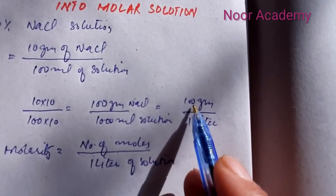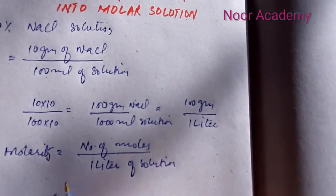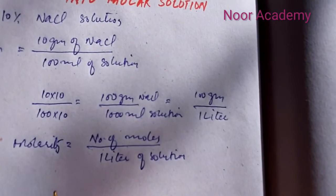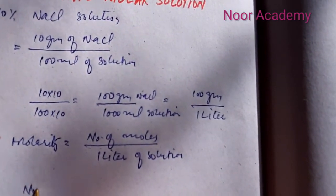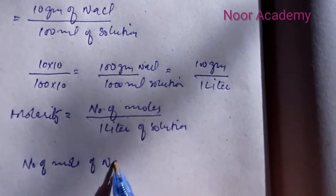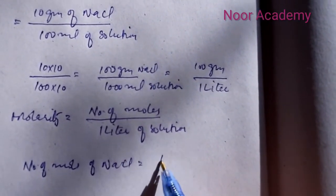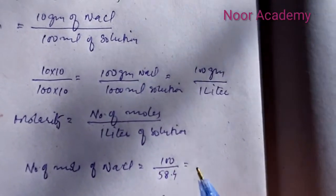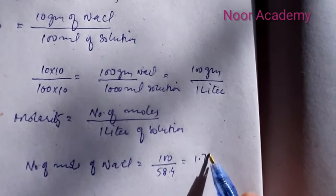We can convert this 100 grams of NaCl into its moles by dividing it by its molar mass, and the molar mass of NaCl is 58.4. So number of moles of NaCl is equal to 100 divided by 58.4, which is equal to 1.71 moles.